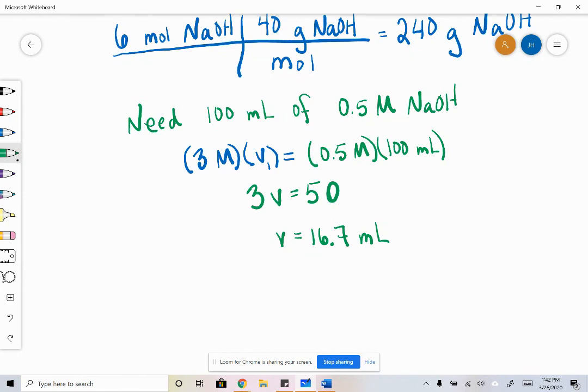So in order to make the solution that we need for this one experiment, we would take 16.7 milliliters of our original stock solution, put that in a 100 milliliter volumetric flask, and then fill the rest with water.